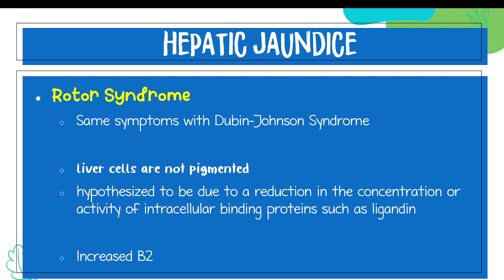Rotor syndrome has the same symptoms as Dubin-Johnson. The key word to differentiate Rotor from Dubin-Johnson is pigmentation. In Dubin-Johnson, there is dark pigmentation in the liver. But in Rotor syndrome, liver cells are not pigmented. It is also hypothesized to be due to a reduction in the concentration or activity of intracellular binding protein such as ligandin. There is also an increase in bilirubin 2 in Rotor syndrome.